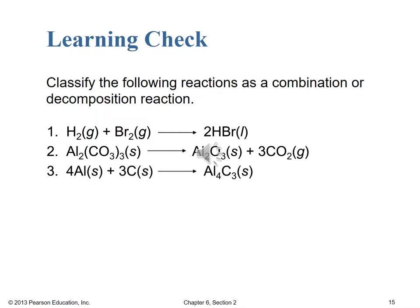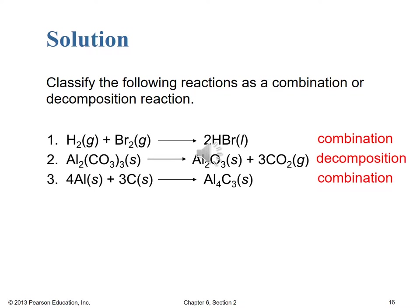We've rushed through that, so it's a good time for a learning check: classify the following reactions as either combination or decomposition. Pause the video, identify them, then resume to check your answers. For that first reaction, two reactants form a single product — that's a classic combination reaction. For the second example, one reactant forms two products — that's a classic decomposition reaction type.